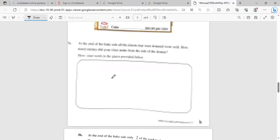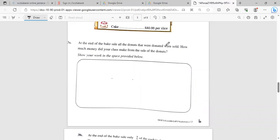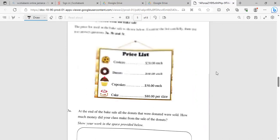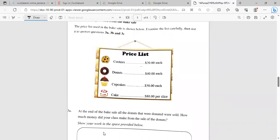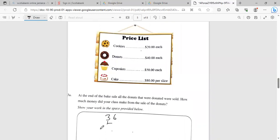Here's 3a: At the end of the cake sale, all the donuts were sold. How much money did the class make? So he said all of them. We had a total of 36 donuts at $4 each. So it's 36 times 4. Four times six is 24, four times three is 12, plus that is 14. So the total revenue that the donut produced was $144.